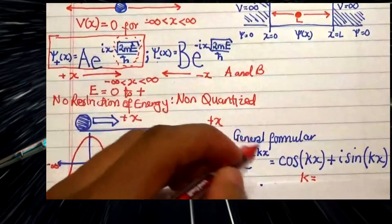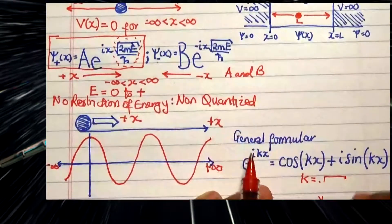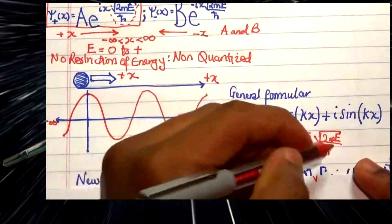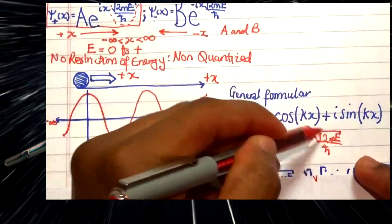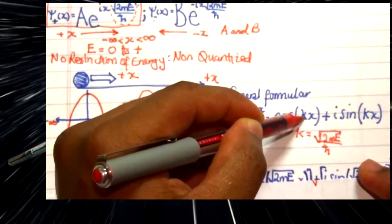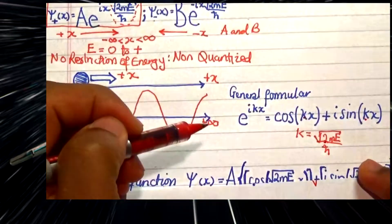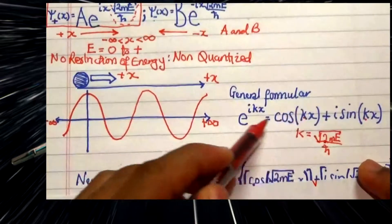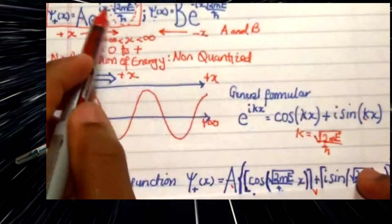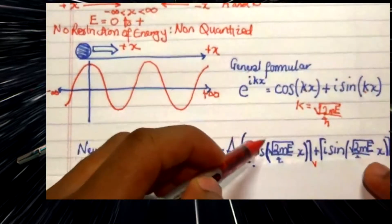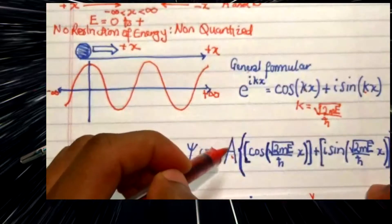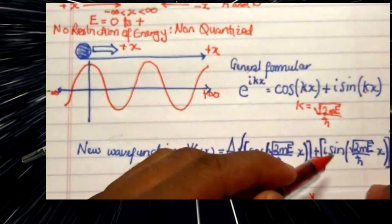The constant k is equal to √(2mE) / ħ. Once we substitute this k value into the wave function formula, we can evaluate and rewrite our wave function — originally expressed as an exponential function — now in terms of cosine and sine, following Euler's formula.